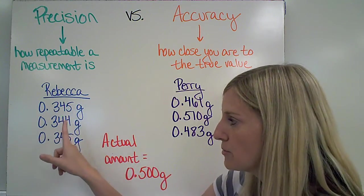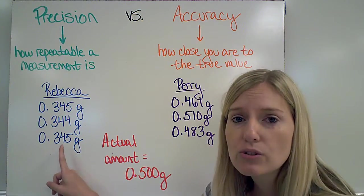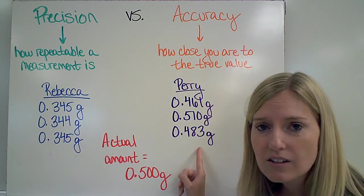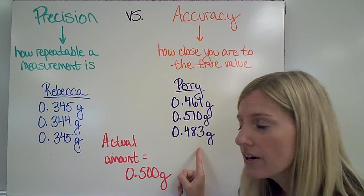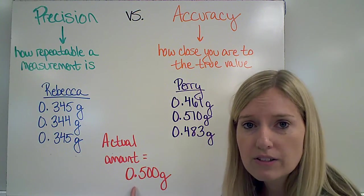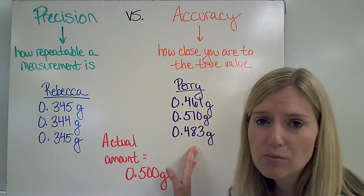Rebecca was able to repeat her results very closely many times, so she was more precise. Perry's results are not as precise or as close together, but they are closer to the actual amount. Out of these results, Rebecca is more precise. Perry is more accurate.